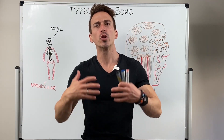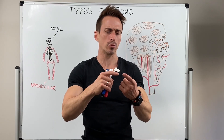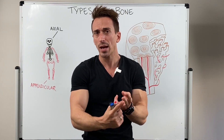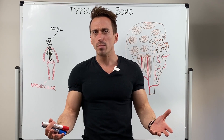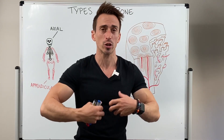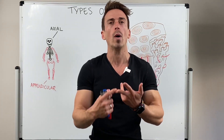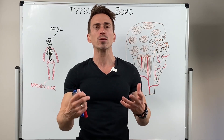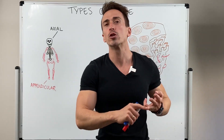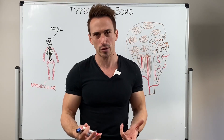The skeletal system is a collection of 206 bones, at least in the adult, that play really important roles when it comes to protection, storage, and support. When it comes to protection, for example, it protects underlying structures or organs. When it comes to support, it's going to be supporting the weight of the body and also the muscles attached to it to allow us to move. And it plays an important role for storage because it's storing important minerals like calcium and phosphate.